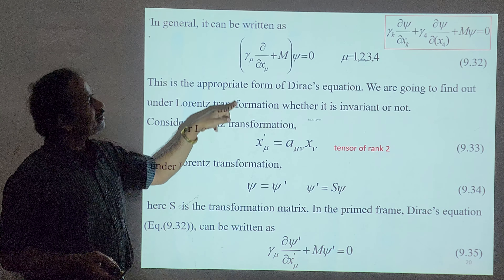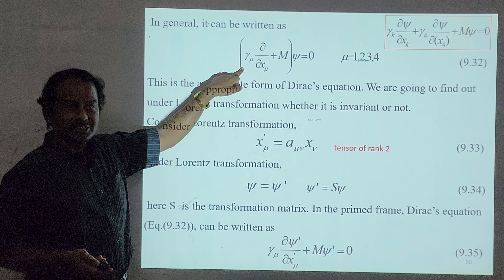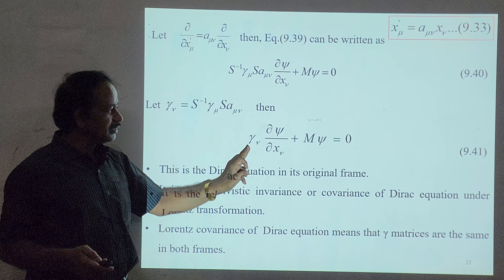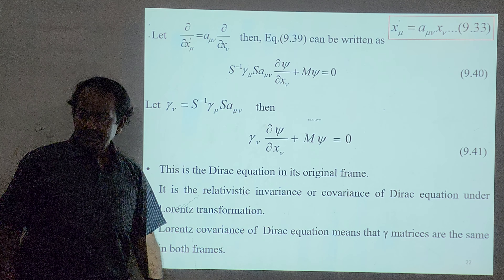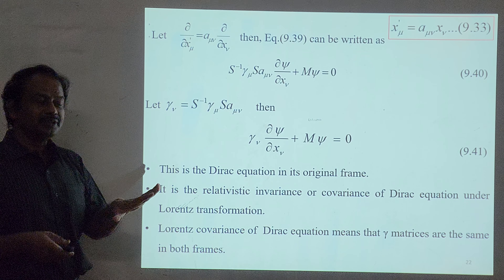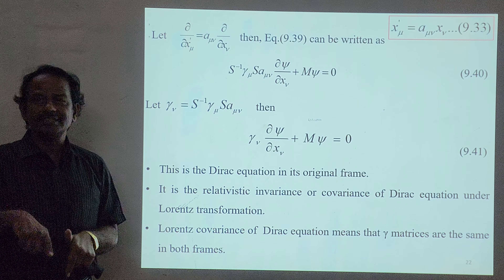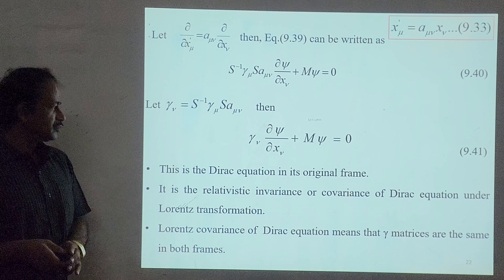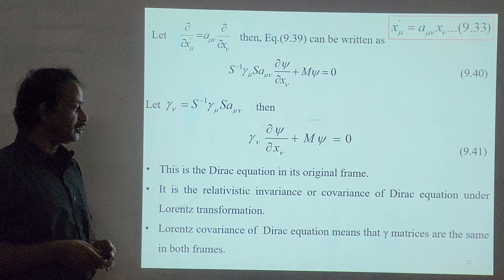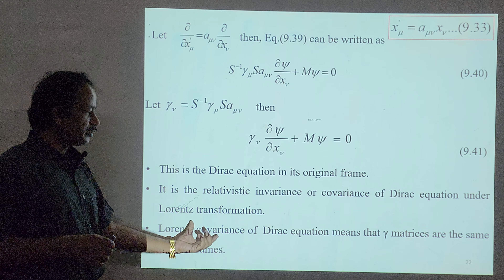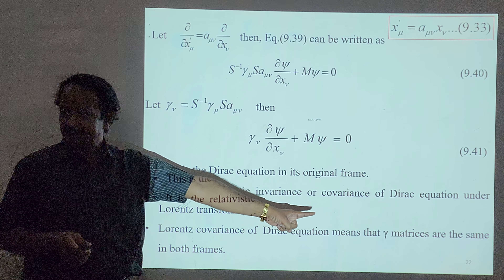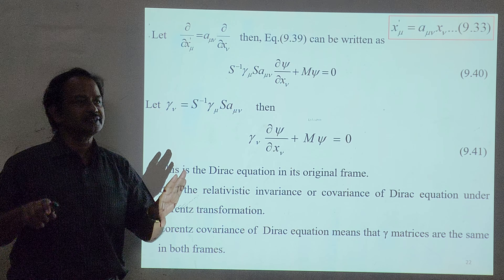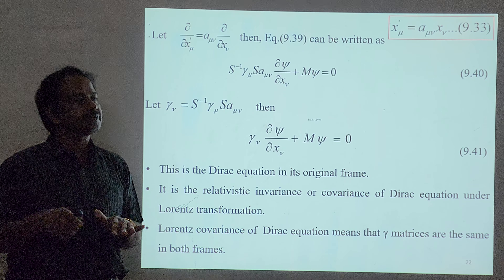Look at this equation and compare it with the equation we started with — they are identical. We introduced Lorentz transformation from one coordinate system to another and obtained the exact same Dirac equation. So Dirac's equation does not change when you change the coordinate system. It is consistent with special relativity. This is the relativistic invariance — or covariance — of the Dirac equation under Lorentz transformation. The key conclusion: gamma matrices are the same in both frames.